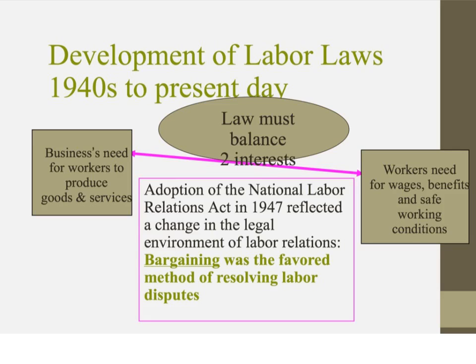The adoption of the NLRA in 1947 reflected a change in the legal environment of labor relations. Bargaining was a favored method of resolving labor disputes — Congress decided that from now on the employer and the employee need to bargain. The law must balance two interests: the business's need for workers to produce goods and services and be successful, and the workers' need for wages, benefits, and safe working conditions. The NLRA was designed to help that balance by encouraging bargaining as the key way to get improvements.